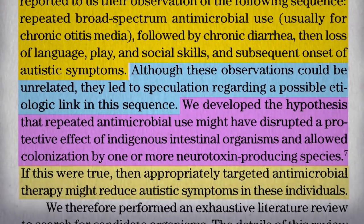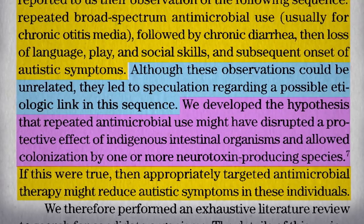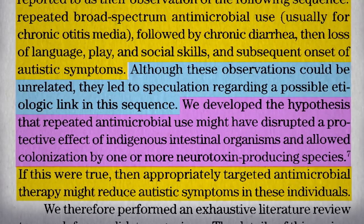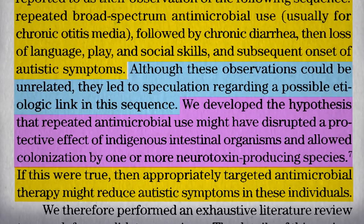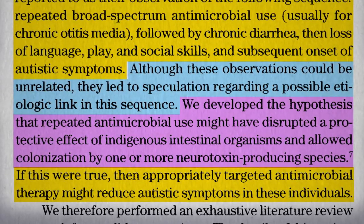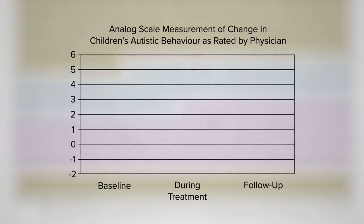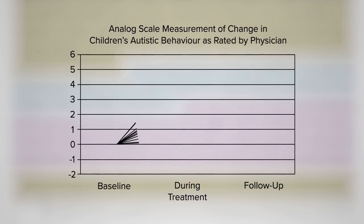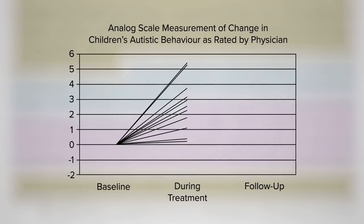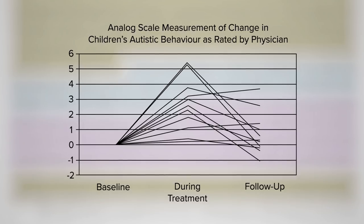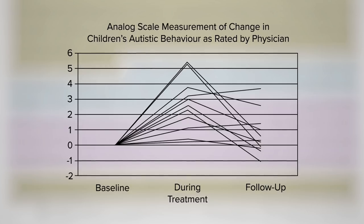If this were true, maybe they could clean the slate once again with another dose of antibiotics — but this time to try to clear out any bad bugs lurking down there. Might that reduce autism symptoms in these individuals? That would be groundbreaking. They put the kids on a powerful antibiotic called vancomycin, and 80% of the kids got better. But within a few weeks after the treatment, most of them slipped back towards their baseline, suggesting that perhaps the bad bugs got pushed down, but not out.